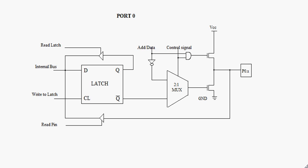Here, we will consider the hardware of port 0 and go through all the components in detail so that we can understand it much better. We know that each port has 8 pins and every pin will have such hardware structure. This tells that story. P0 stands for port 0 and that X can be anything ranging from 0 to 7.